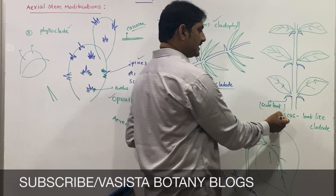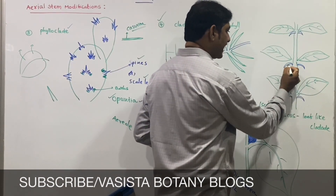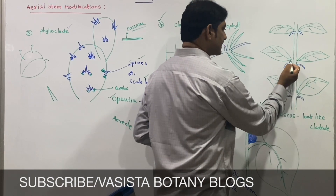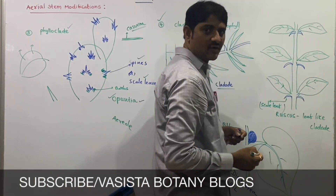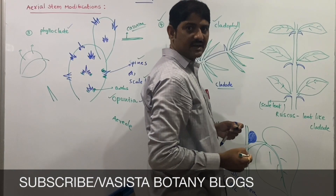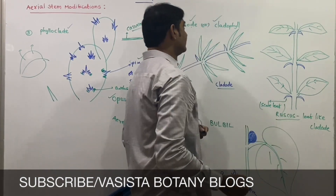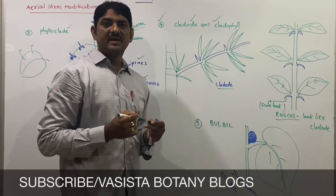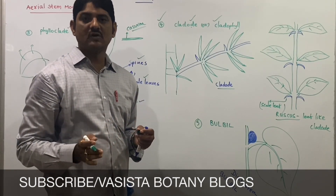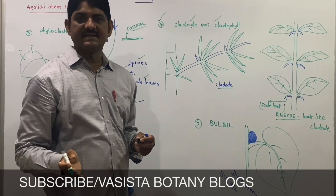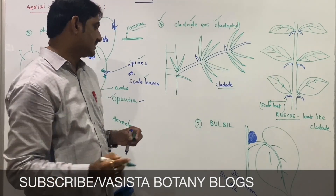In Ruscus, a leaf-like cladode is present in the axil of a scale leaf. This leaf-like cladode is a branch of limited growth that performs photosynthesis. It is called a cladode.